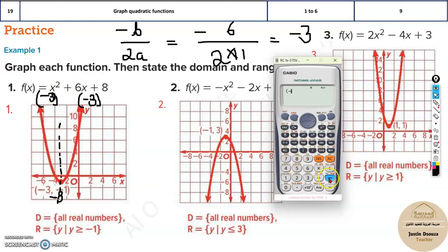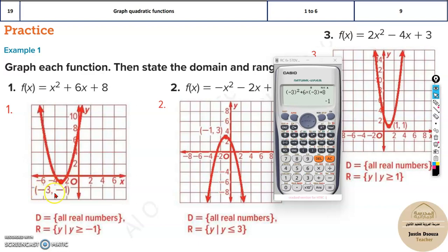Just put -3 instead of x. Use the bracket because it's minus over here and it's -3, plus 8, and the answer is -1. So you can see here, x was -3, y is -1, and then the solutions were -2 and -4, and it opens upwards.